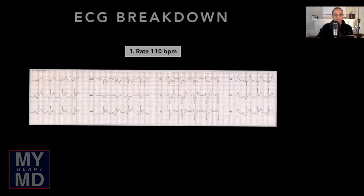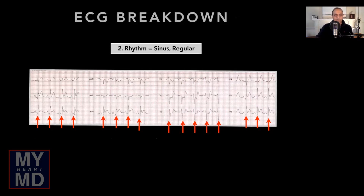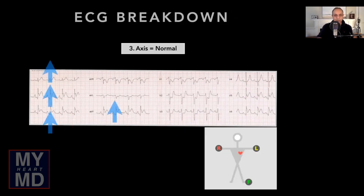Looking at the rate — it's about 110. The rhythm is sinus and regular. Every QRS follows a P wave. Unlike the first strip where it was regular but there were no discernible P waves, there are P waves here. So this is sinus and regular — that's quite reassuring.